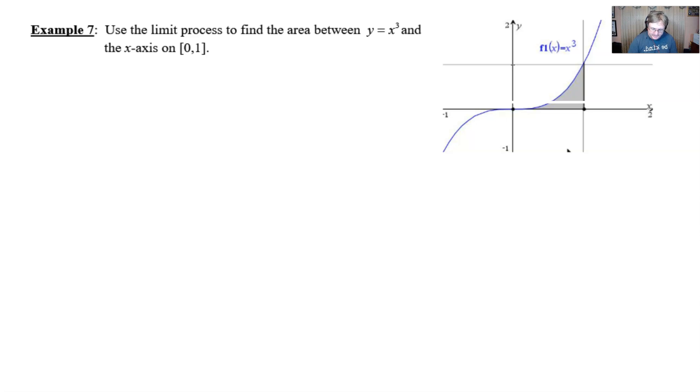So let's go ahead and take a look at our example 7. Use the limit process to find the area between y equals x cubed and the x-axis on the interval 0 to 1. Now you'll notice here in the picture I've got the graph of x cubed sketched from 0 to 1. The area underneath it is all encompassed by this shaded region. So essentially we're finding the area of all of this gray shaded region and we're going to be able to get an exact area out of this.